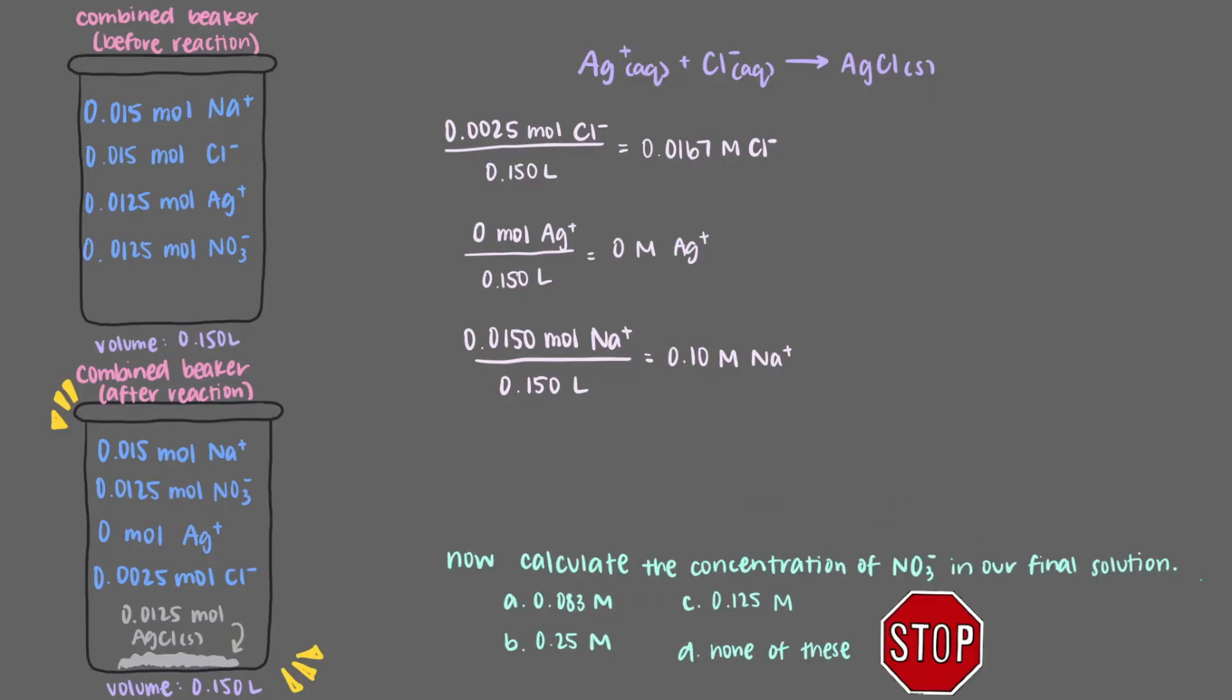Now calculate the concentration of nitrate ions in our final solution. Just like the sodium ions, nitrate is a spectator ion. It didn't react and so the number of moles of nitrate stayed the same when we put the two solutions together. However, the volume changed to 0.150 liters like we said before. This means that we will divide 0.0125 moles by 0.150 liters to get that the new concentration of nitrate ions is 0.083 molar.